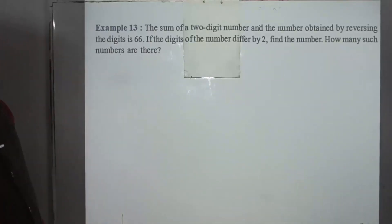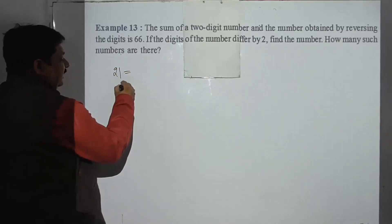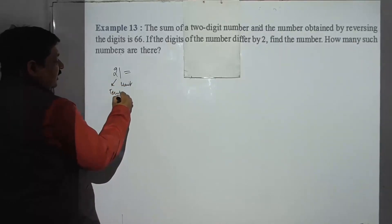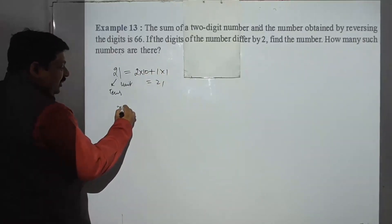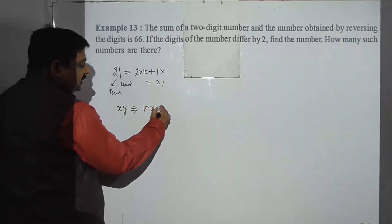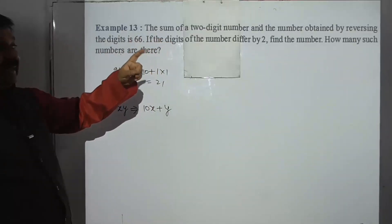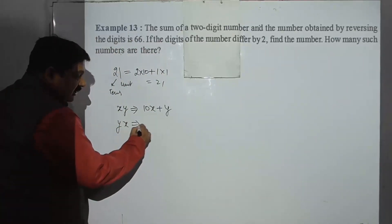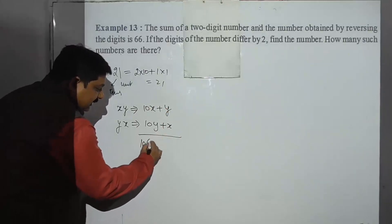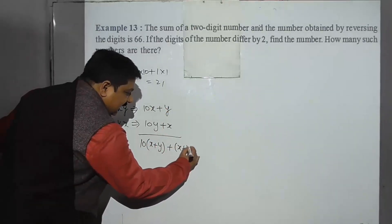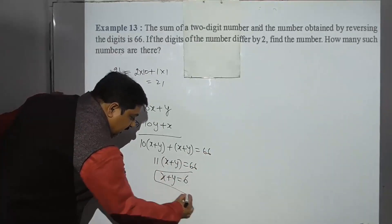Next, let's look at the example: the sum of a two-digit number. In algebra, when we represent a number like 21, we write it as 2 times 10 plus 1. So if a number is written as xy, in algebra it is 10x plus y. The number obtained by reversing the digits is 10y plus x. Their sum equals 66, giving us 11x plus 11y equals 66, i.e., x plus y equals 6.